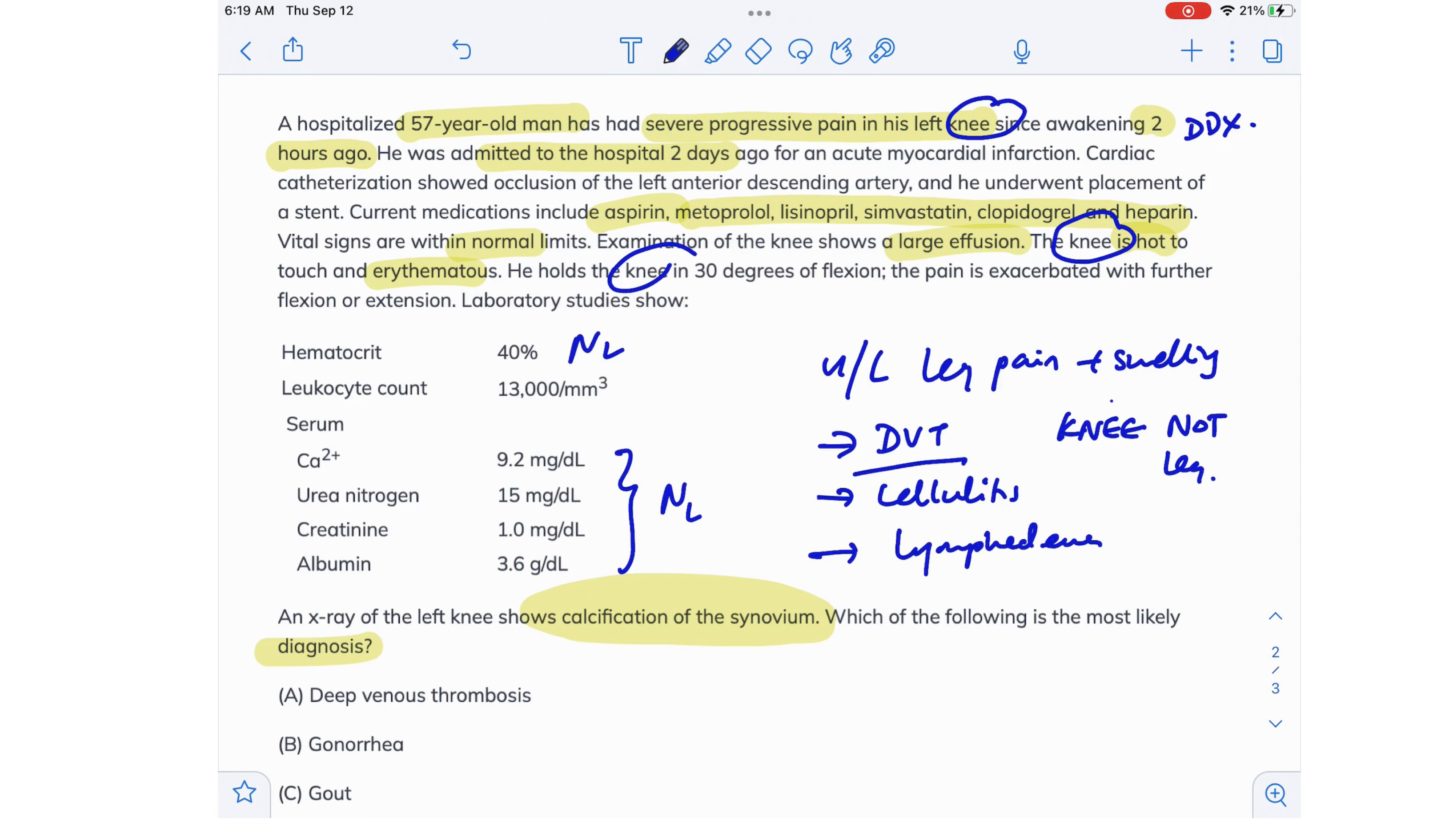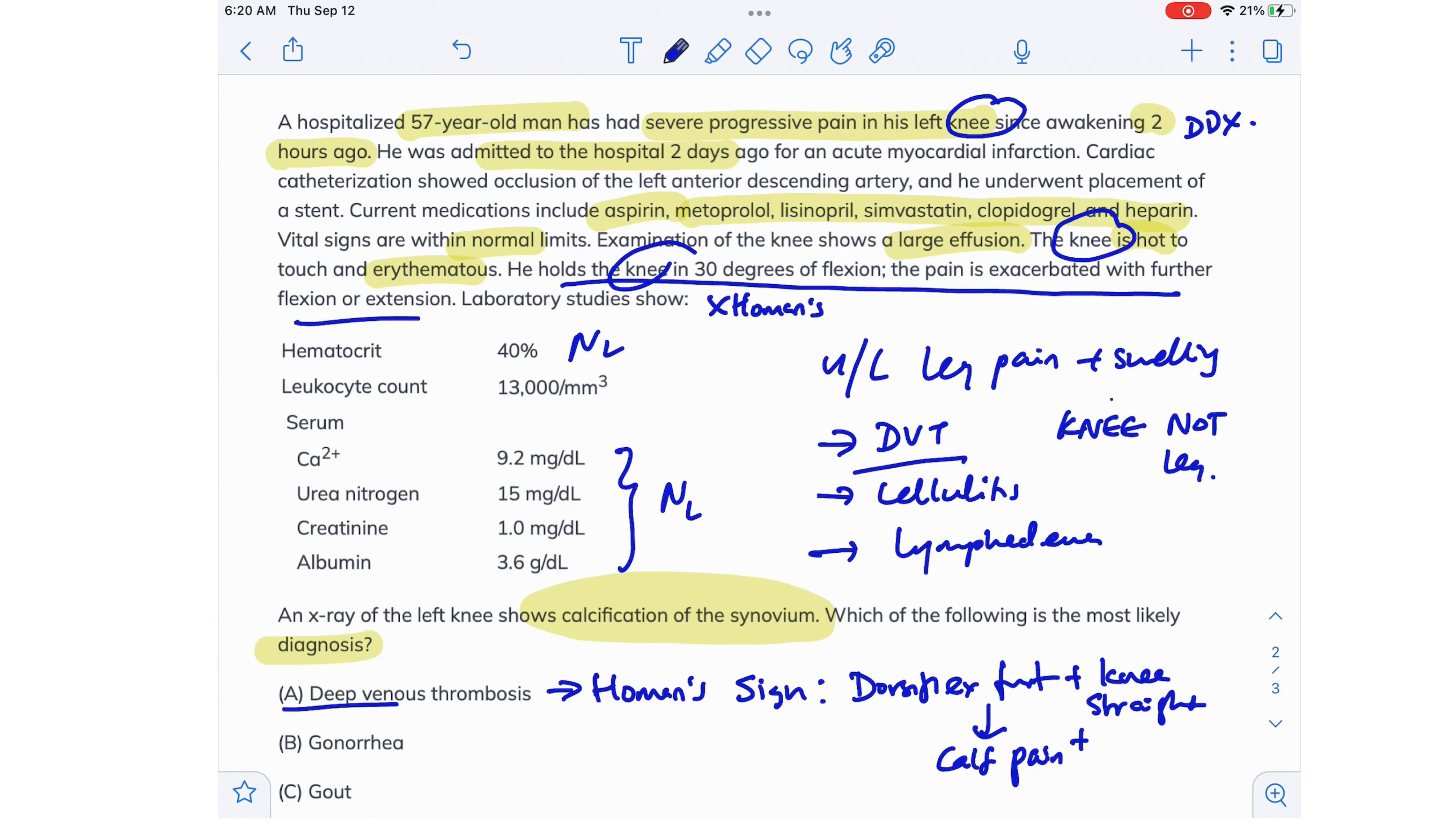This is not DVT. And in case you were thinking about this physical examination finding 'he holds the knee in 30 degrees of flexion, the pain is exacerbated with further flexion or extension,' you know in DVT there's a physical examination finding called the Homan's sign. The Homan's sign means basically when you dorsiflex the foot with your knee straight, it can cause calf pain or elicit leg pain. That is Homan's sign. So the physical examination sign they're talking about in this question is not the Homan's sign, so don't get confused and think this is the Homan's sign and tick answer A.